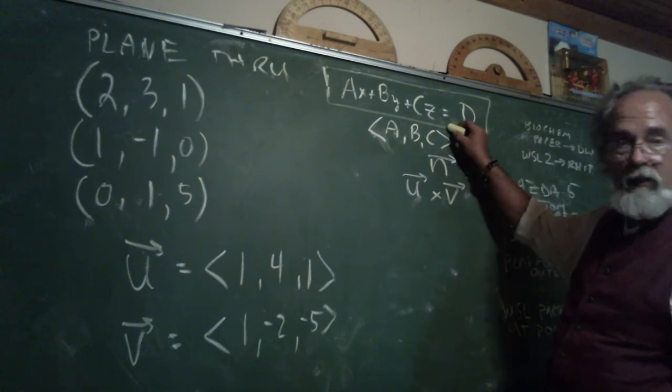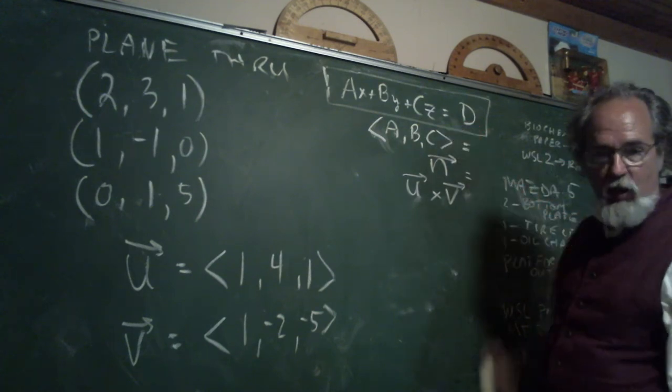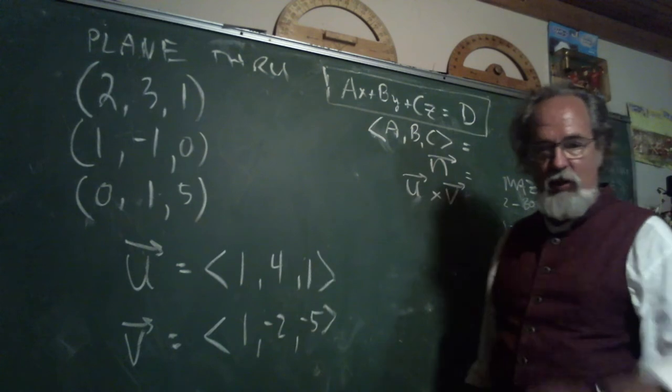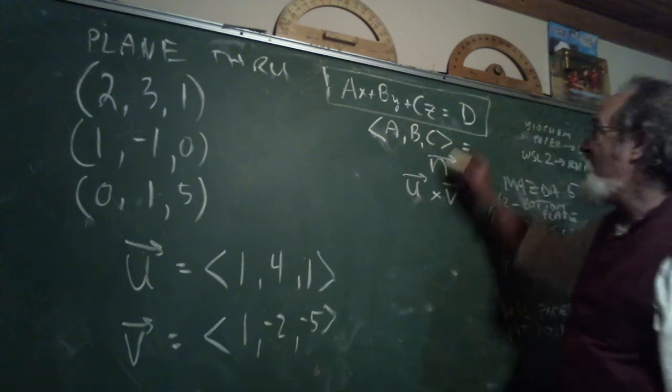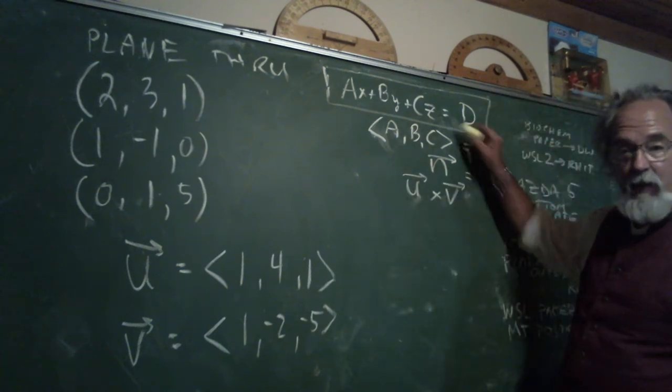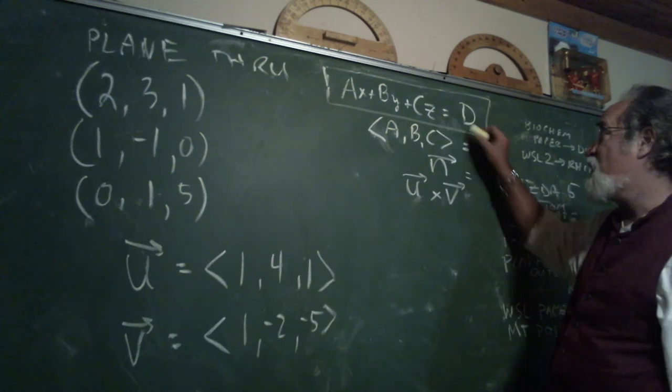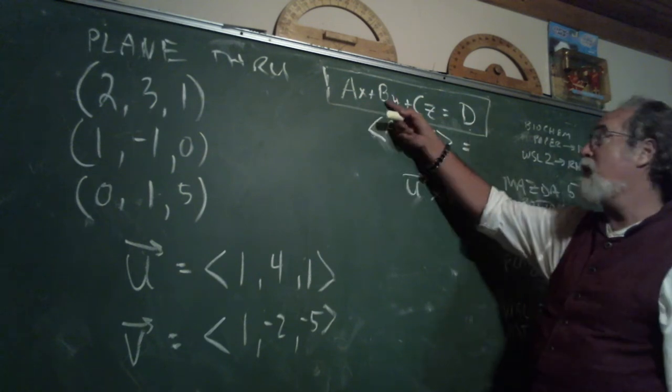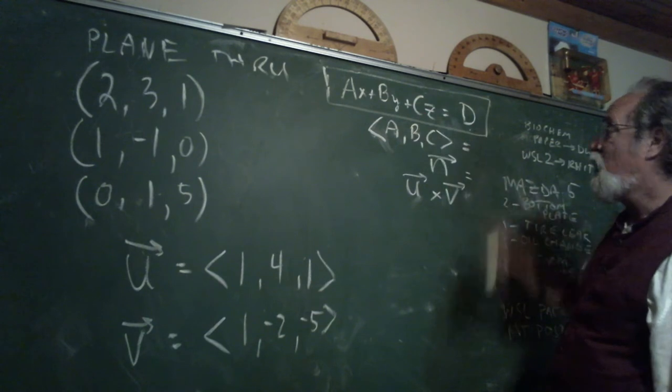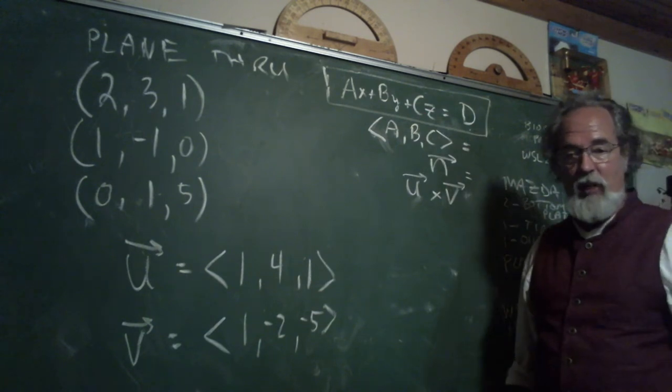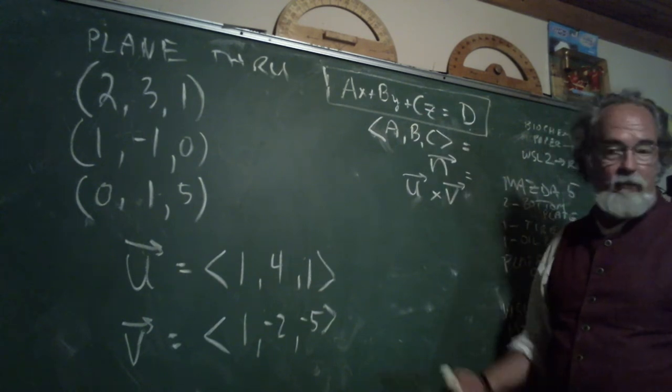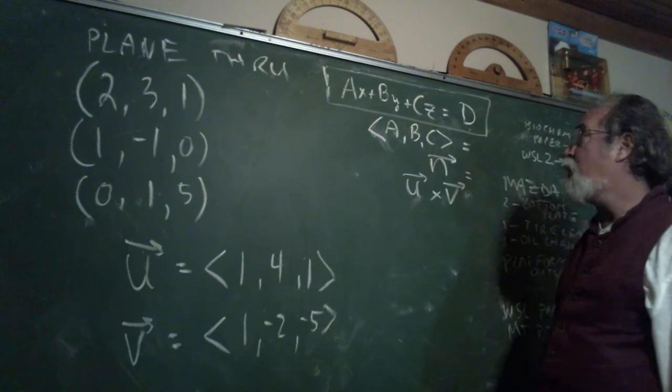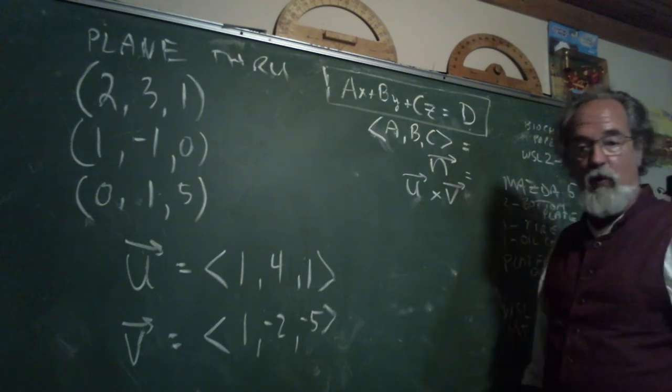Any plane in 3D has this equation. A, B, C, D are just numbers. So this stands for literally any plane. So you could have the plane Z equals zero. So it's big A equals zero, big B equals zero, C equals one, D equals zero. Big Z equals zero is the XY plane. So that's a plane, and all the points in it have Z coordinate zero. X and Y can be anything.